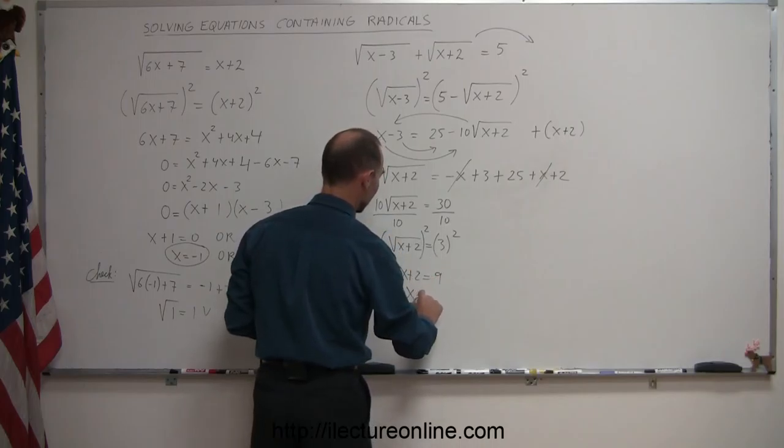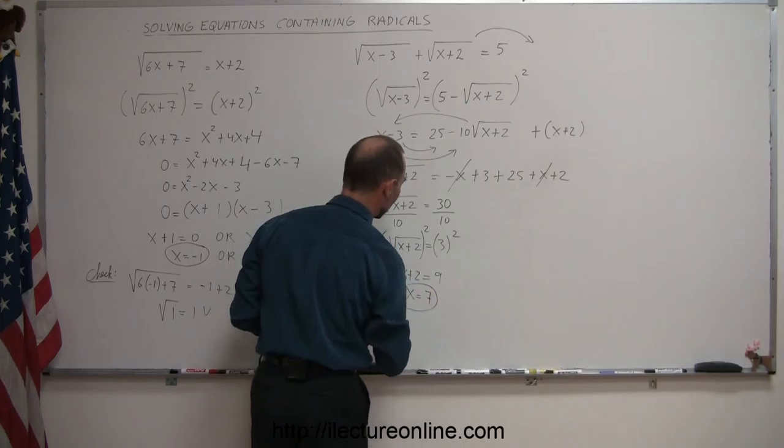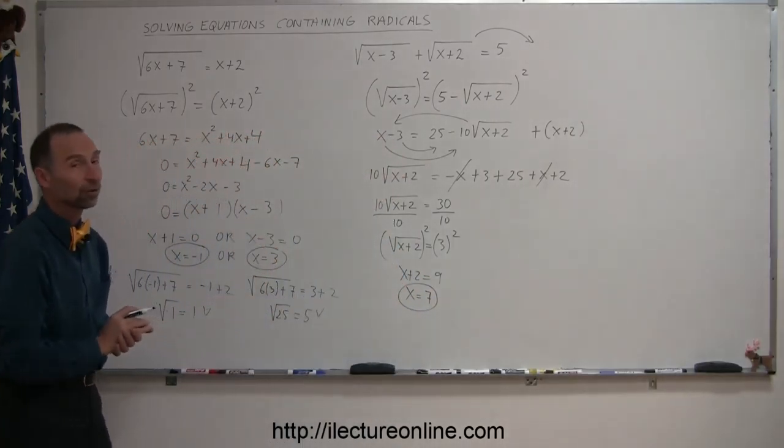We square the right side. So we end up with x plus 2 equals 9. Moving the 2 across, we get x is equal to 9 minus 2, or 7. So there's the solution for that original equation.